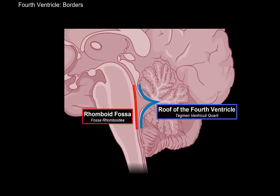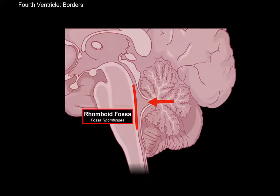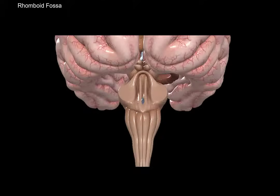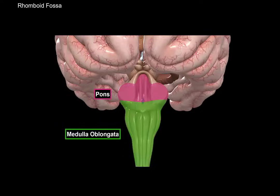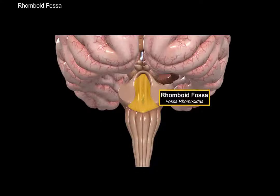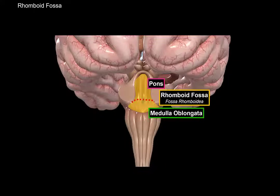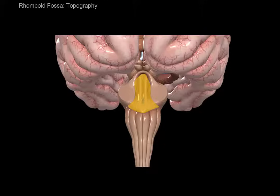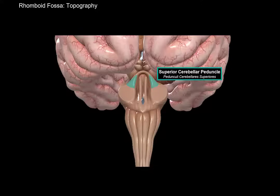Now let's open up the roof and focus on the base of the fourth ventricle, which is the rhomboid fossa. Looking at the brainstem from the posterior perspective after removing the cerebellum, we can see the pons, the medulla, and the midbrain, and here is the rhomboid fossa. We divide the rhomboid fossa into two main regions: the upper region is pons, and the lower region is the medulla oblongata. Topographically, the rhomboid fossa is bordered by the superior and inferior cerebellar peduncles.